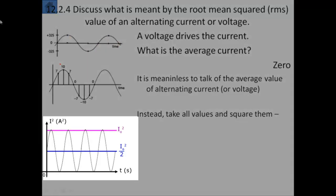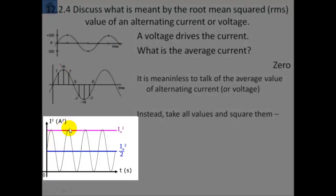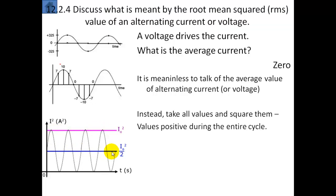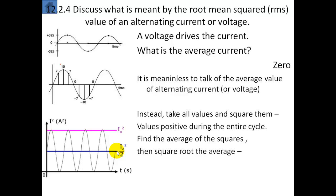So this is what we've done here. We've taken all the values of the current and we've squared them. Notice that we only have positive values now. This is the maximum current squared, and the average will be half of that. So we take all the positive values during the entire cycle, we find the average of the squares. This is the peak of all the squares, and the average is basically going to be half that value. But we're not interested in the average of the current squared — we have to find the square root of the average of the squares. So we do find the square root of the average, and we have what's called the root of the mean of the square, or the root mean square — the RMS value.